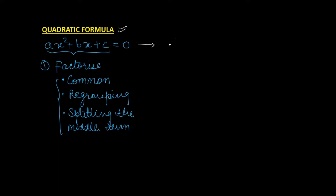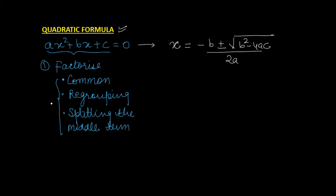The quadratic formula says that the solution of the given equation is x = (−b ± √(b² − 4ac)) / 2a, where a is the coefficient of x², b is the coefficient of x, and c is the constant term.